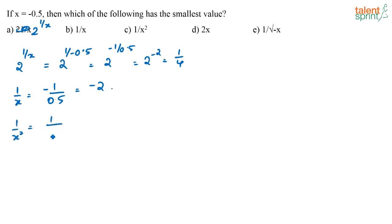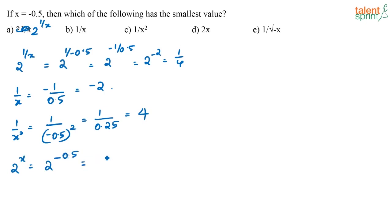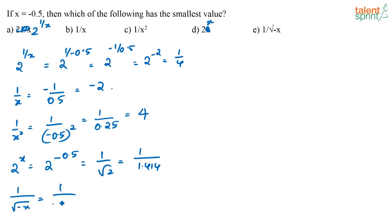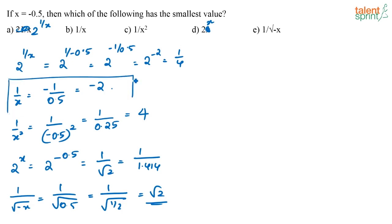Then 2 to the power x is 2 to the power minus 0.5, equal to 1 by root 2, that is 1 by 1.414. And 1 by root of minus x equals 1 by root of 0.5, which is equal to root 2. So the smallest value here is definitely 1 by x, that is minus 1 by 0.5, which equals minus 2. The smallest value is 1 by x.